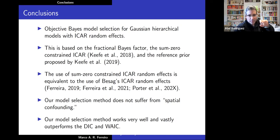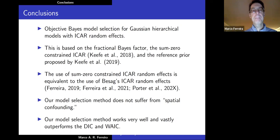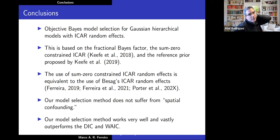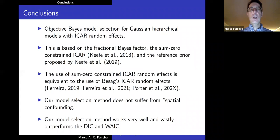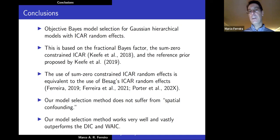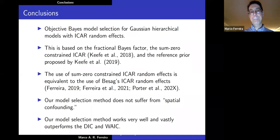Question from Abel: The fractional Bayes factor is sometimes inconsistent — is there any theory addressing this? Marco's answer: The fractional Bayes factor is inconsistent when the training fraction grows with sample size. In our case the training fraction is fixed (b = m/n with m = p+1, a constant), so existing results show that the fractional Bayes factor is consistent in that case.